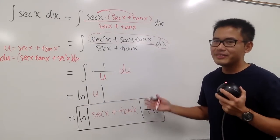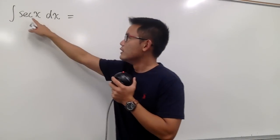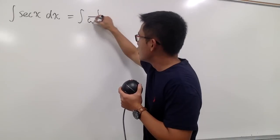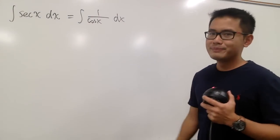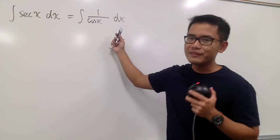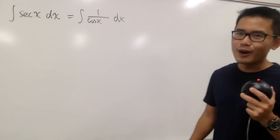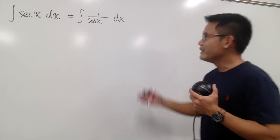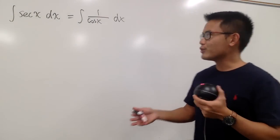Since u is secant x plus tangent x, we have ln of the absolute value of secant x plus tangent x, plus C. This is the standard result. For the second way, secant x is the same as 1 over cosine x, so we can write the integral as the integral of 1 over cosine x dx. Can we do this by u-sub right now? Not really, because if we let u equal cosine x, then du is negative sine x dx, and we don't have any sine x factor to help us out.